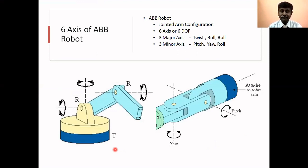This robot has six axes or six degrees of freedom. It has three major axes and three minor axes. The three major axes are: twist - the base can turn, then roll - the lower arm can roll, and the upper arm can roll. These are the three major axes.